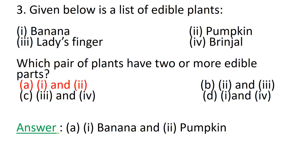Question number 3: Given below is a list of edible plants — Plant 1: Banana, Plant 2: Pumpkin, Plant 3: Lady's finger, Plant 4: Brinjal. Which pair of plants have two or more than two edible parts? Option a: One and two, Option b: Two and three, Option c: Three and four, Option d: One and four.